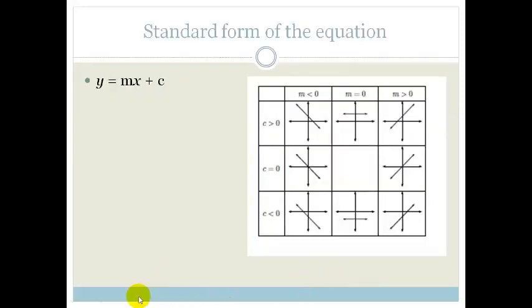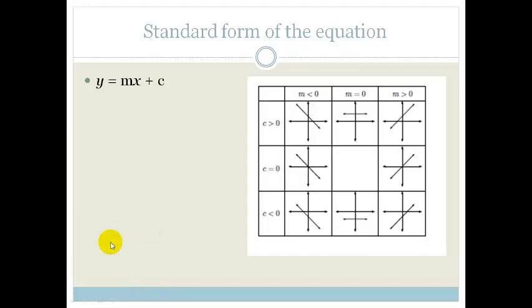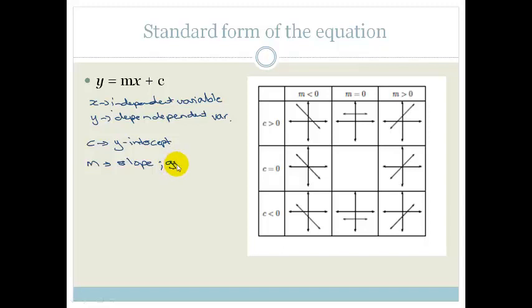The general equation for the straight line is y equals mx plus c, where x is your independent variable and y is your dependent variable. What you need to know about m and c: c is your y-intercept — it's where it cuts the y-axis. And m is your slope or your gradient; slope and gradient mean the same thing.